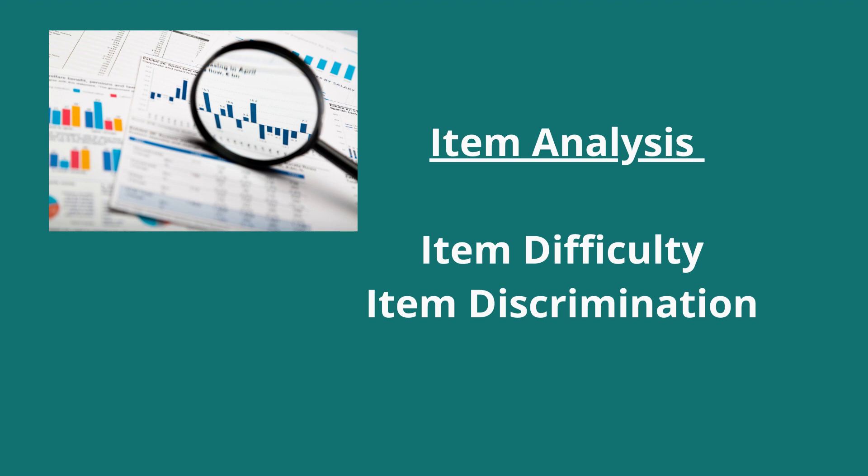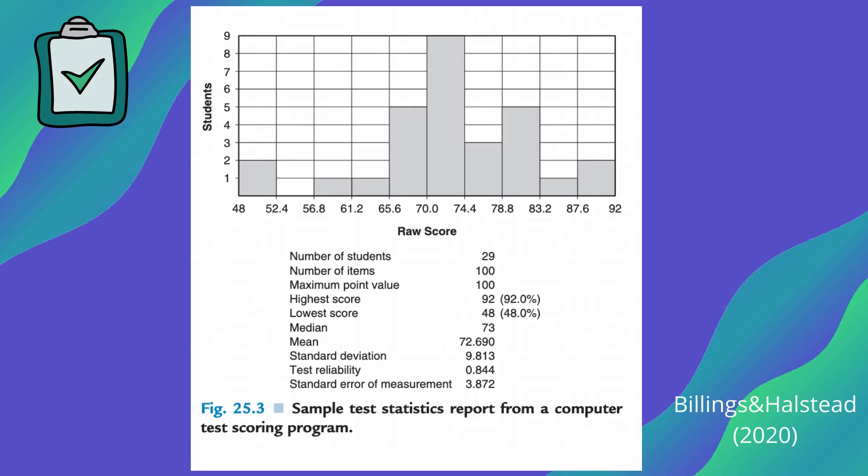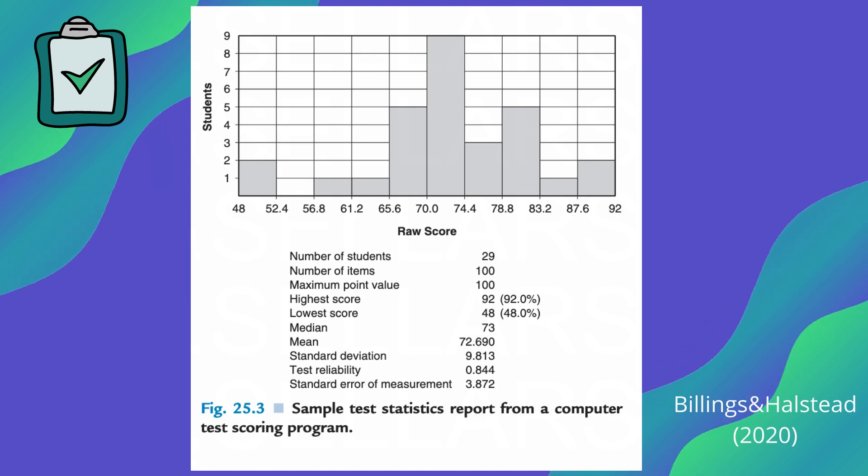Item difficulty and item discrimination are two key concepts I want to make sure you all understand. When we think about item difficulty, it's exactly as it describes — how difficult was that item? There's a difficulty index that quantifies the level or interpretation of difficulty. If the difficulty index is less than 0.30, it indicates that less than 30% of students answered the question correctly, indicating high difficulty, and we should revise that question. On the opposite end, if the difficulty index is greater than 0.80, it's way too easy because more than 80% of students answered correctly — we would want to revise that as well.